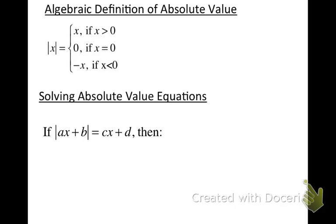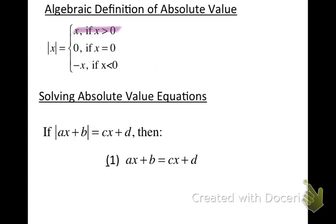We're going to assume that we don't know whether this quantity is positive or negative. One way we'll go about solving this is to assume that the quantity inside the absolute value bars is positive — that's Case 1. If we assume that, then the quantity inside the absolute value bars and the quantity on the other side are the same. If you're taking the absolute value of a positive number, you get the same thing you started with. So we can say x plus b equals cx plus d.